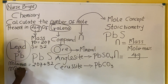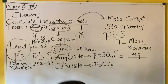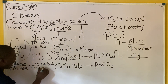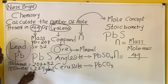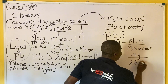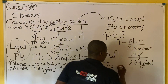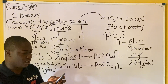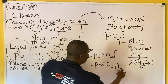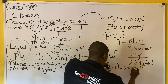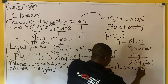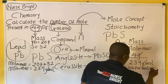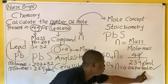The molar mass of galena is 207 plus 32, which equals 239. The unit of molar mass is grams per mole, so it is 239 g/mol. The number of moles therefore is 4 divided by 239, which gives 0.01674 moles. So the final answer is 0.01674 mol. You can write mol or spell it in full as moles — either way you are correct.